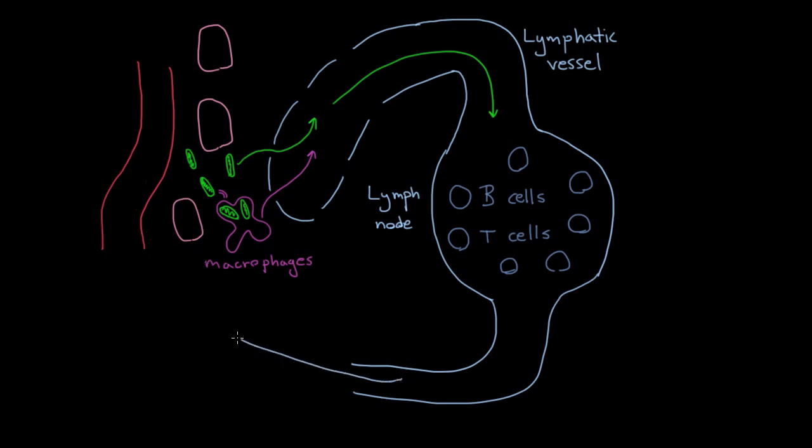So ultimately the fluid is going to end up back in the blood. And so actually another nice side effect of having these lymph nodes here interspersed throughout the lymphatic vessels is that they'll actually filter all this fluid that's going to get put back into the blood.